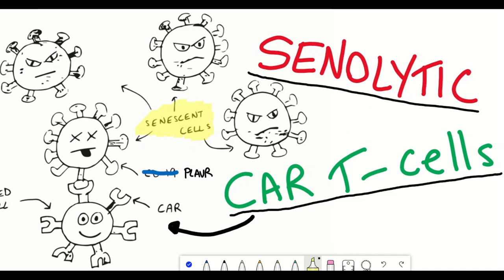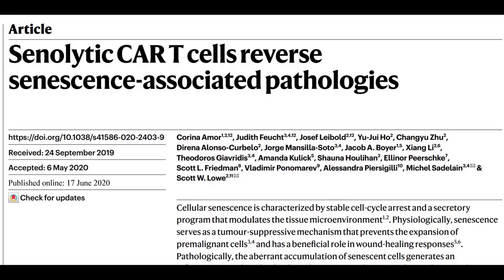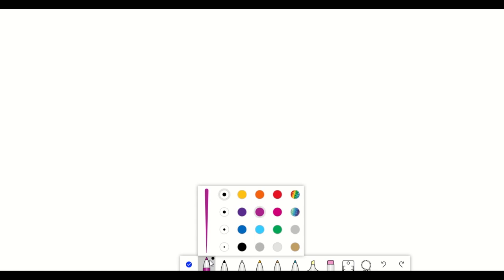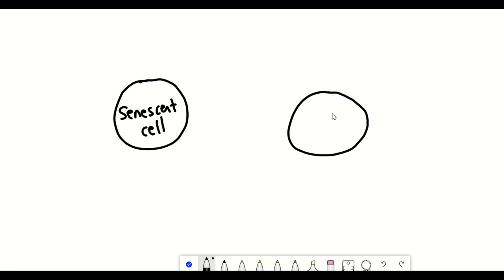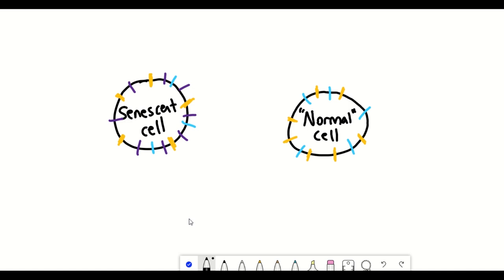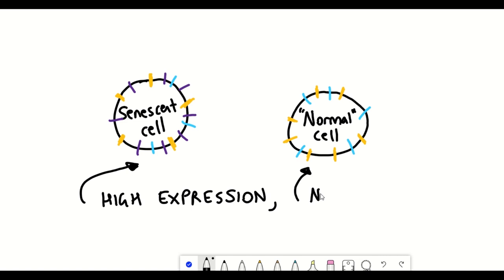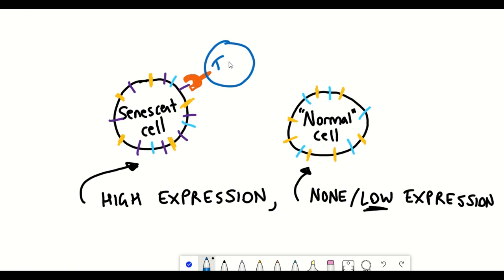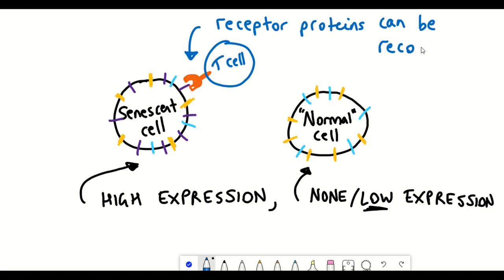Is there any way that CAR T-cell technology can be used to remove senescent cells? This recent Nature paper suggests the answer is yes. Firstly, they needed to identify a protein target present on senescent cells but not on normal healthy cells, to develop the chimeric antigen receptor in the engineered T-cells. They did this by looking at genes expressed in senescent versus healthy cells, identifying genes highly expressed in senescent cells but low in normal cells, specifically genes encoding surface receptor proteins recognisable by T-cells.